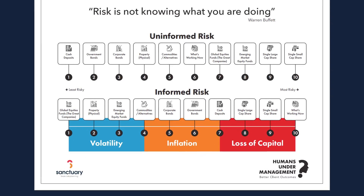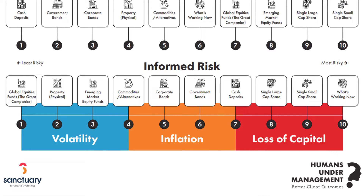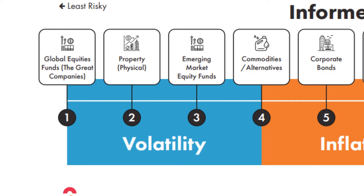But actually, if we really learn a bit more about risk and what it actually is, we then call that informed risk. And this scale again is on a one to ten, but it's been flipped around a little bit. And actually, as you can see in the blue, orange, and red, we're talking about volatility, inflation, and loss of capital. Now, they're big things to be taking into account. But if you turn risk on its head and actually really understand what risk is, by investing in the great companies of the world — or global equity as you call it — is actually one of the least risky things to do.